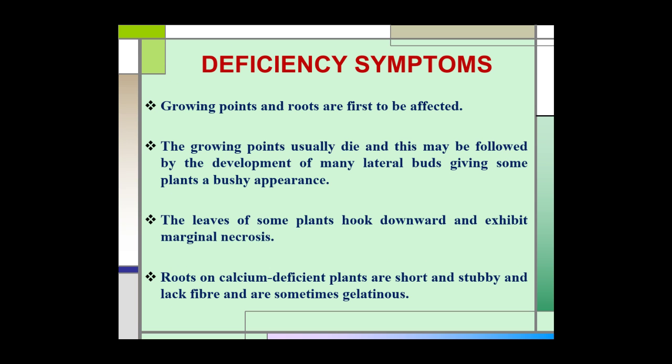The growing root tips and roots are the first to be affected due to deficiency of calcium. The growing points usually die and this may be followed by the development of many lateral buds, giving plants a bushy appearance. The leaves of some plants hook downward and exhibit marginal necrosis. Roots of calcium deficient plants are short and stubby — they lack fiber and are sometimes gelatinous.